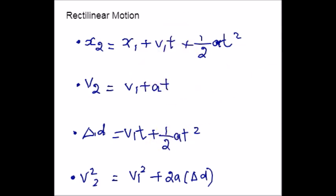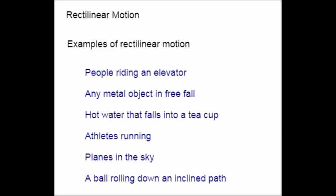Now, let us see some examples of rectilinear motion in daily life. We can contrive many examples of rectilinear motion in our daily lives. Here are a few examples that I have taken. People riding an elevator are in rectilinear motion along with the elevator within a building. And the second one is any metal object in free fall which is under the influence of gravitational forces is rectilinear motion. Hot water that falls into a teacup from a vending machine is also in rectilinear motion. And athletes who are running the 100 meter dash along the track are in rectilinear motion. Same way, the very common example is planes in the sky that move in a straight path are considered to be rectilinear motion. And the common example that we generally look in our house is a ball rolling down an inclined path is considered to be in rectilinear motion.